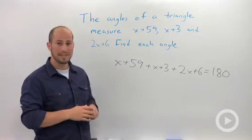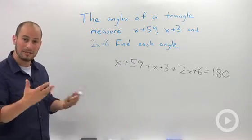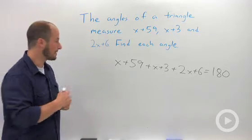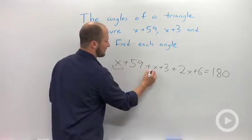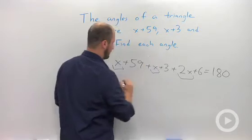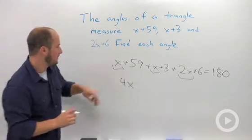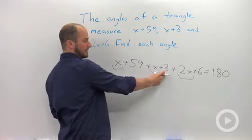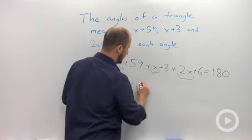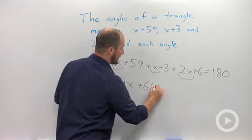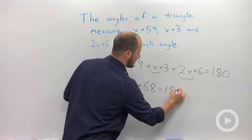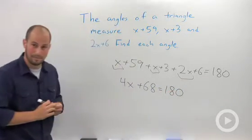From here we need to combine like terms like we would any other linear equation. We have x, x, 2x - that's 4x. 59 plus 3 is 62, plus 6 is 68, and the other side hasn't changed at all.